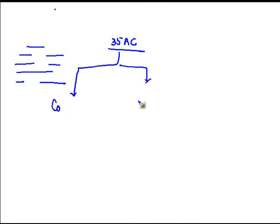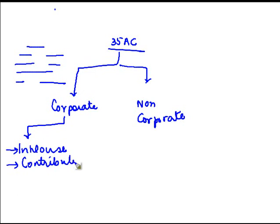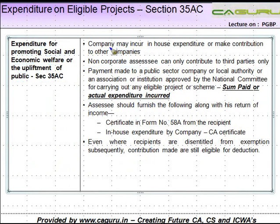The two categories are: corporate assessees and non-corporate assessees. A corporate assessee can incur the expenditure in-house — meaning they can themselves incur expenditure for the upliftment of the public — or they can contribute to agencies nominated for this purpose. A non-corporate assessee, on the other hand, can only contribute; they cannot incur in-house expenditure, and even if they do, they are not eligible for deduction under this section.